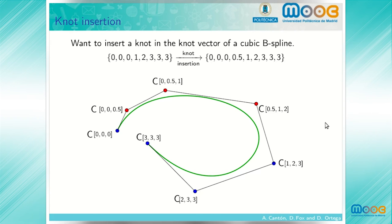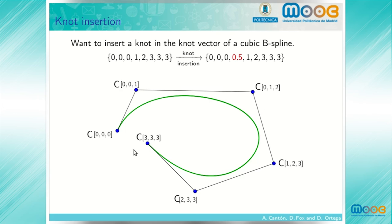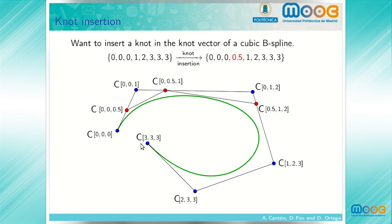Observe that this new control polygon has one more vertex than the old control polygon. The new control polygon has seven control vertices, whereas the old one had six. So when adding a node in the knot vector, we are also adding a control vertex in the control polygon. Not only do we add a vertex, but some vertices are also changed: certain vertices disappear in the new control polygon and are replaced by new ones. This is the new added vertex.